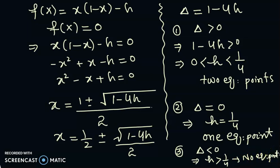So we have three categories: if h is between 0 and 1/4 we have two equilibrium points; if h equals 1/4 we have one equilibrium point; and if h is greater than 1/4 we have no equilibrium point.